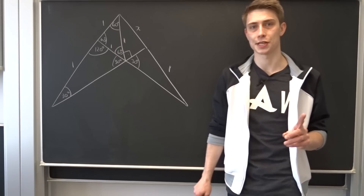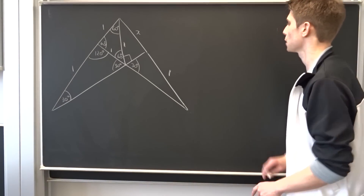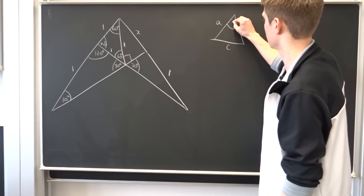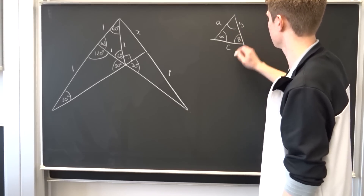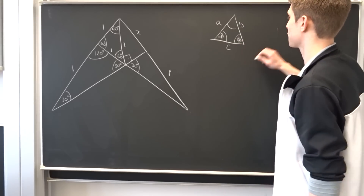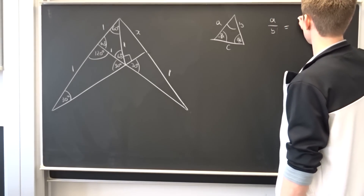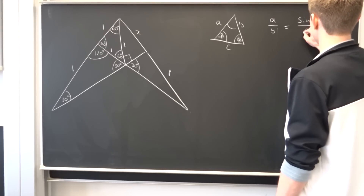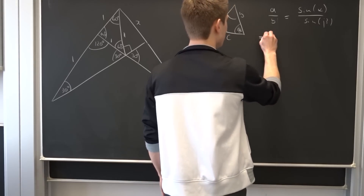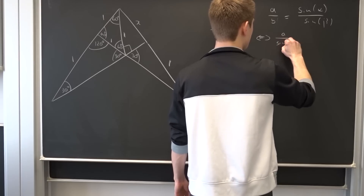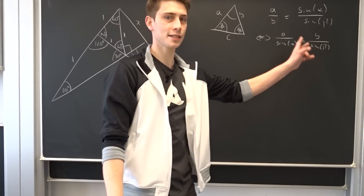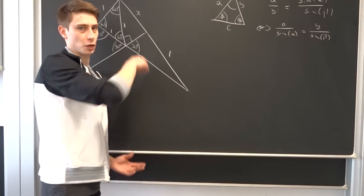Now let's look at the Law of Sines. We have a triangle with vertices a, b, c and angles alpha and beta. The Law of Sines tells us that a over b equals sine of alpha over sine of beta, which is equivalent to saying a over sine of alpha equals b over sine of beta. We can use that here.